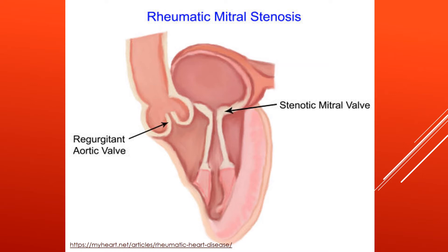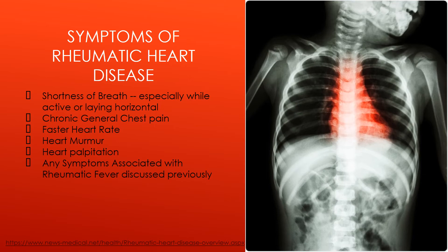Research professionals are still not sure why certain parts of the heart are more commonly affected by rheumatic heart disease, as the tissue of all the valves is the same. As you can see in the picture on the right, the inflamed areas of the heart are most commonly on the patient's left side, as the most affected areas are the mitral and aortic valves. Some of the most common symptoms associated with rheumatic heart disease are shortness of breath, especially while the patient is active or laying horizontally, general chronic chest pain, an increased heart rate, a heart murmur, heart palpitations, and any other symptom associated with rheumatic fever previously discussed.